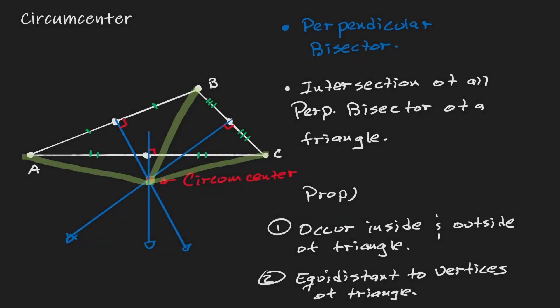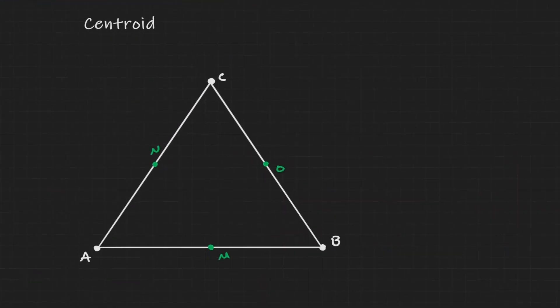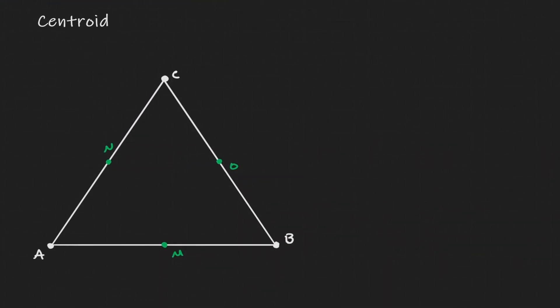Now that we have defined and discussed the circumcenter, let's discuss the last idea for today: the centroid of a triangle. For the centroid, let's consider the medians of the triangle.